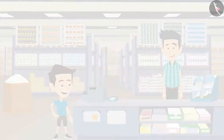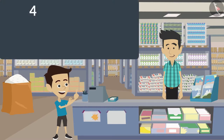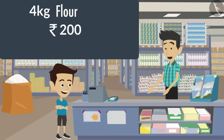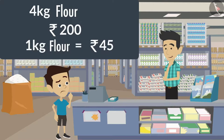Sham stopped at a grocery store while coming back home. His mother had told him to buy four kgs of flour, for which she gave him 200 rupees. The shopkeeper told him that the cost of one kg of flour is 45 rupees. Sham wasn't sure if the money he had would be enough. Will Sham be able to buy the flour with the given money, or will he need more? Think for a while.